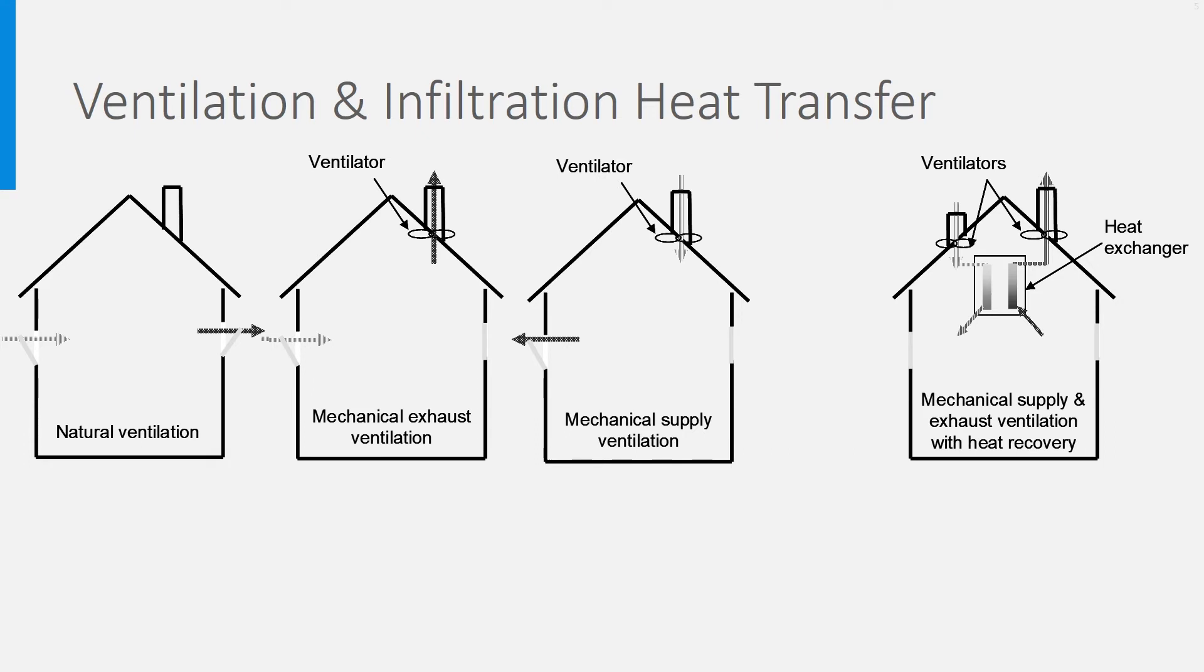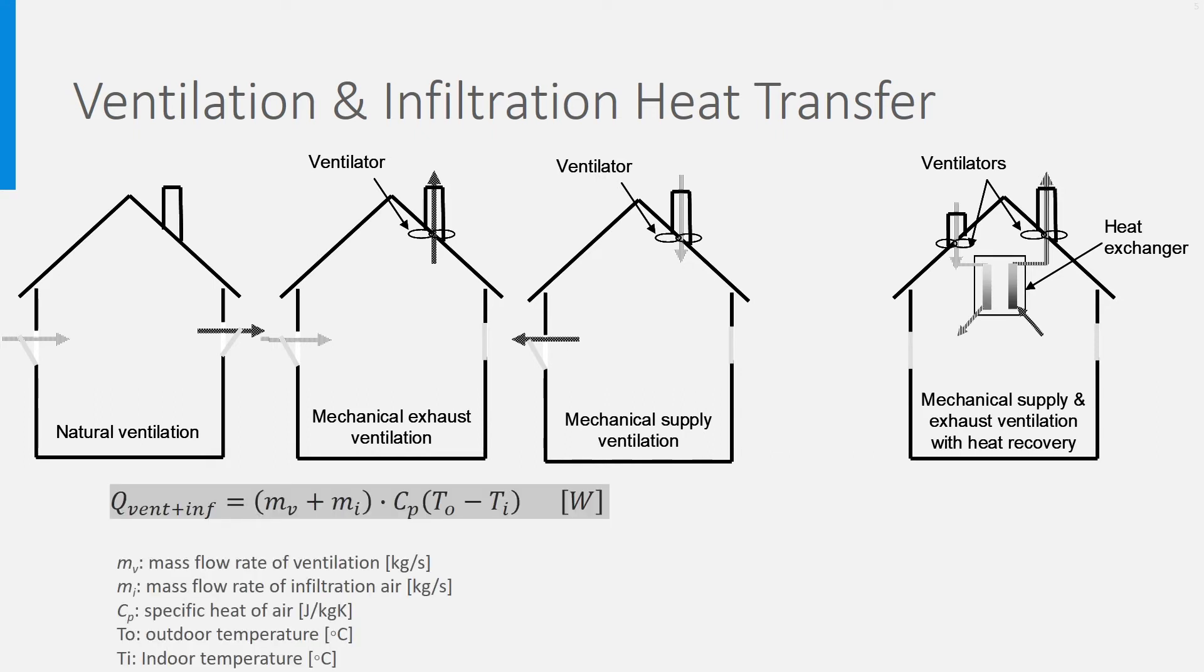To calculate the heat transfer due to ventilation and infiltration in the first three systems, you have to sum up the mass flow rates of ventilation and infiltration and multiply it by CP, the specific heat of air, times the temperature difference between outdoor and indoor air. If you apply a system that uses heat recovery, the fourth system, another formula should be applied.